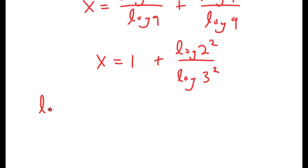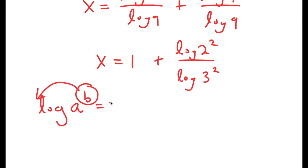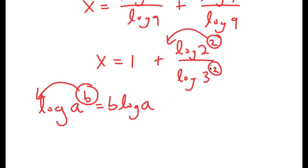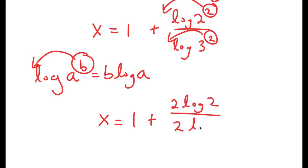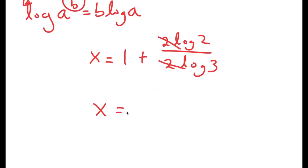And if I have something in the form log of a to the power of b, I can move this exponent of b to the front. In this case, I can move 2 to the front in both the numerator and denominator. So I get x is equal to 1 plus 2 times log 2 over 2 times log 3. From here, I can cancel out the two 2s, so I get x equals 1 plus log 2 over log 3.